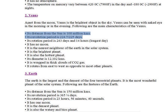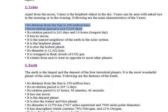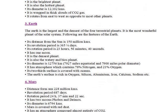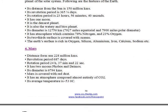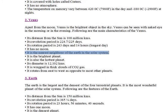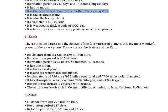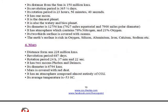Its revolution period is 224.7 to 225 days. Its rotation period is 243 days and 14 hours, making it the longest day. It has no moon and is the nearest neighbor of the Earth in the solar system.